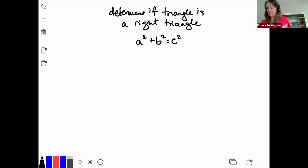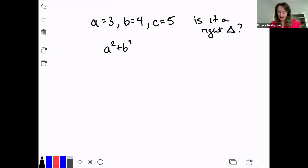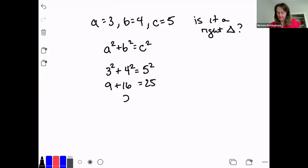Let's look at a couple of examples. First: A equals 3, B equals 4, and C equals 5. Is it a right triangle? We plug into the Pythagorean theorem: 3 squared plus 4 squared equals 5 squared. 9 plus 16 equals 25. 25 equals 25 — true! Since we got a true statement, yes, it is a right triangle.